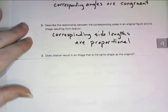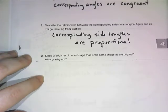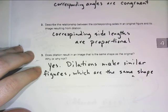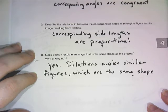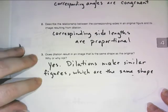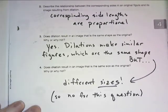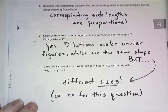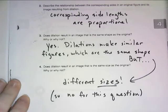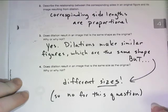When you go to number 3, does a dilation result in an image that's the same shape? Yes, because dilations make similar figures. And we know in similar figures they are the same shape, but dot dot dot, they are different sizes. So the answer for number 4 is no, they are not the same size. They are different sizes in our dilated similar figures.